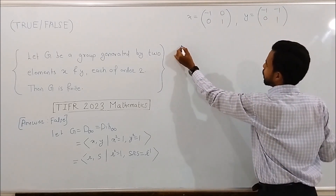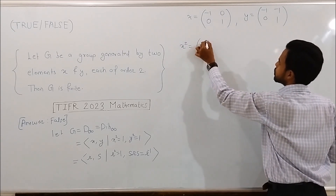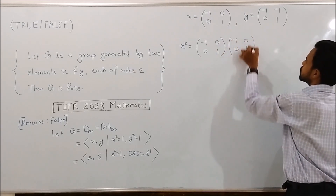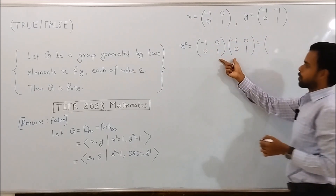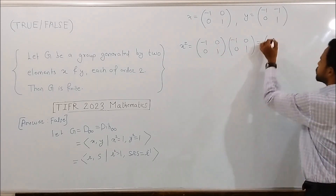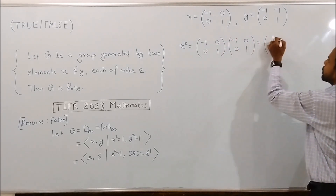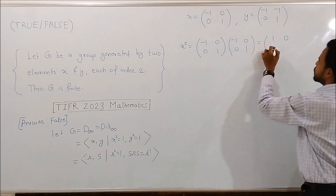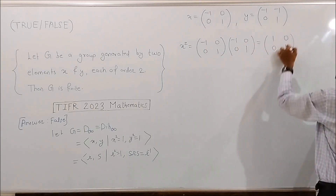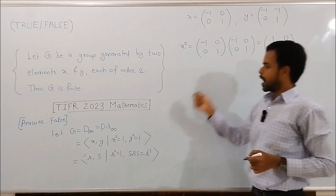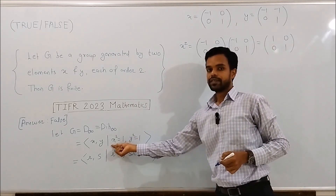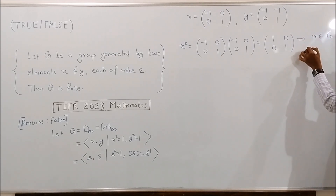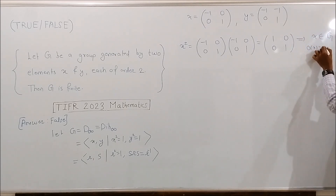Consider x². Performing ordinary matrix multiplication: first row into first column gives 1, first row into second column gives 0, second row into first column gives 0, second row into second column gives 1. So x² is the identity matrix. This implies x belongs to G and the order of x is 2, because 2 is the least positive integer such that x times x is the identity matrix.